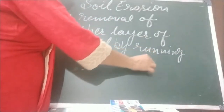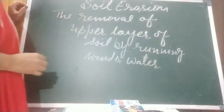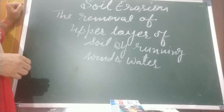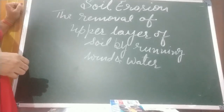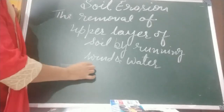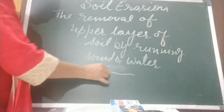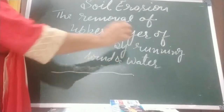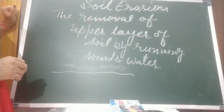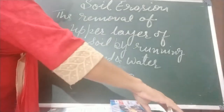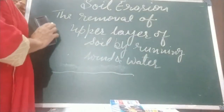What happened in soil erosion? As you remember, the upper layer or O horizon is rich in humus. When rain falls or wind blows, if the upper layer is loose and there is no plantation, this layer will be removed by running wind and water. So we are going to discuss the major causes of soil erosion.